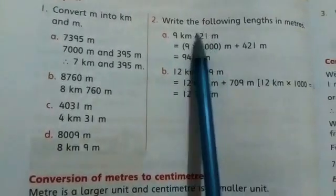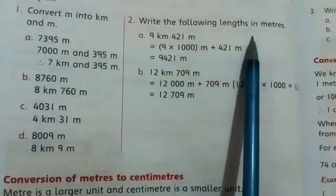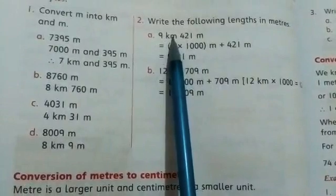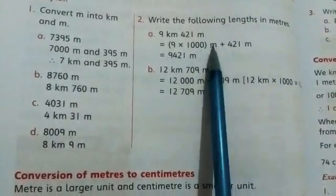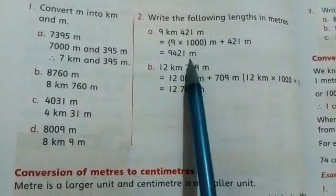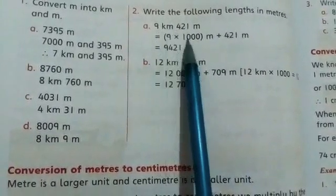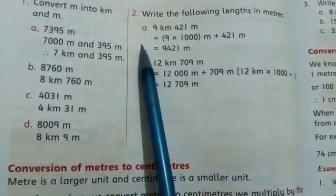Here you have to write the following length in meters. Now you have to write in meters. So we will change kilometers to meters, then add meters to meters. Like here, how will we make 9 kilometers into meters? When we go from large units to small units, we will multiply.